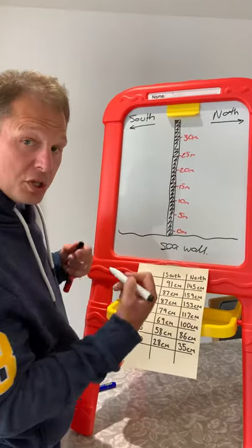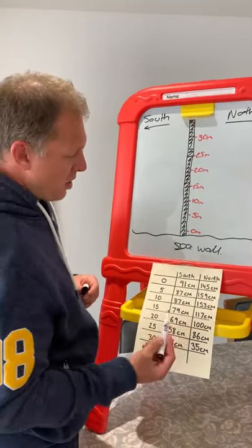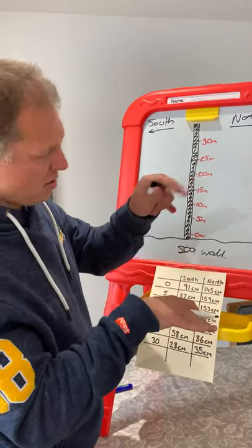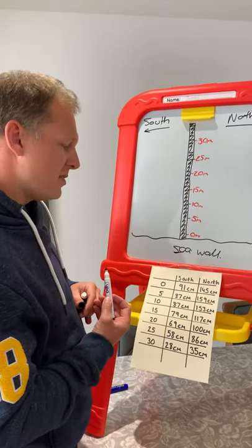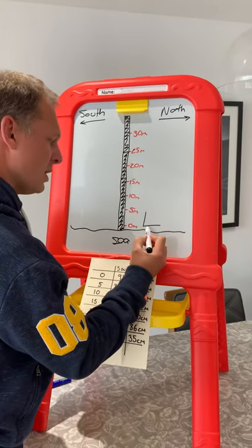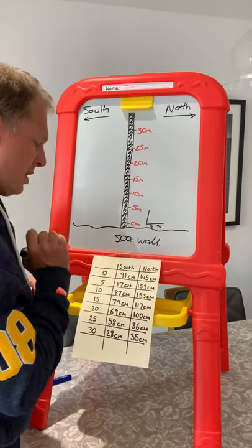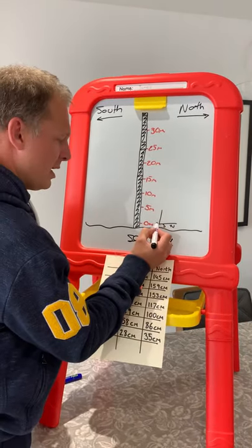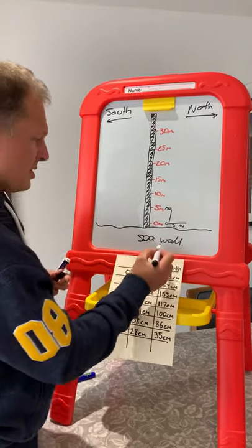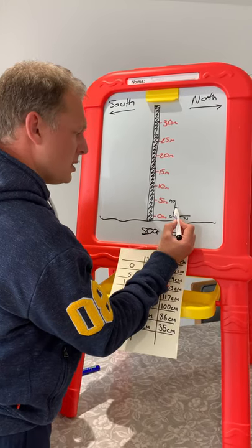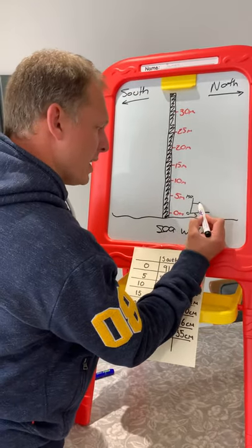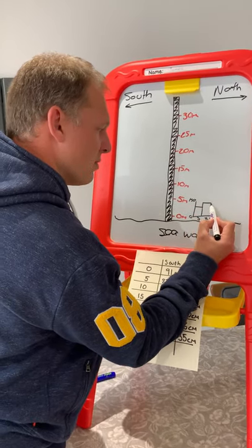I'm going to start at zero and I want you to do this too. At zero metres, we've got ninety-one centimetres from the top of the beach to the top of the groin on the south side, and a hundred and forty-five centimetres on the north side. So I'm going to start off with a bar chart showing south and north. If I was going to draw this accurately, I'd have a scale of nought to a hundred and fifty centimetres — south bar at about ninety-one, and north at a hundred and forty-five.